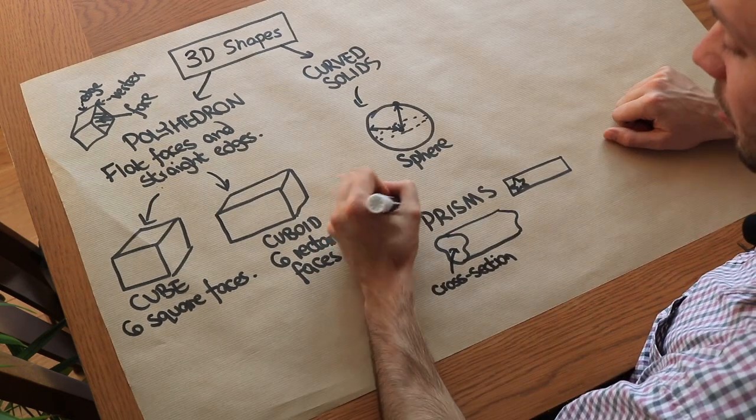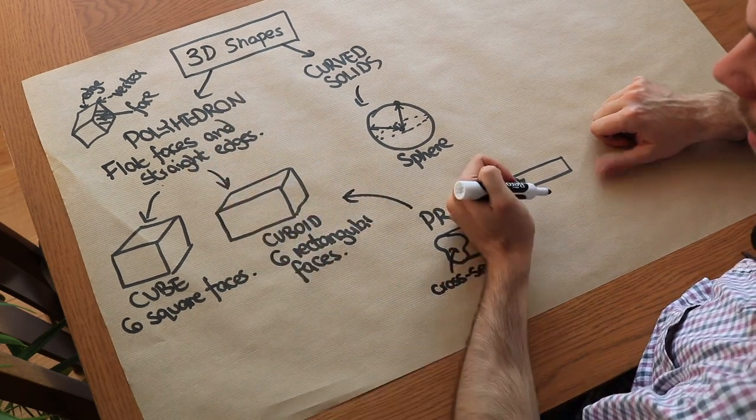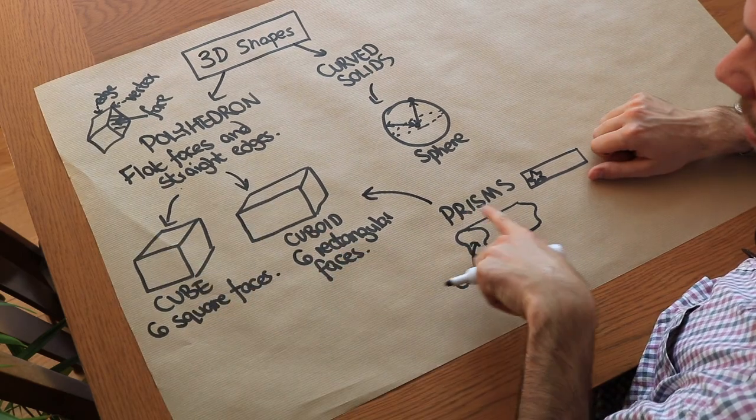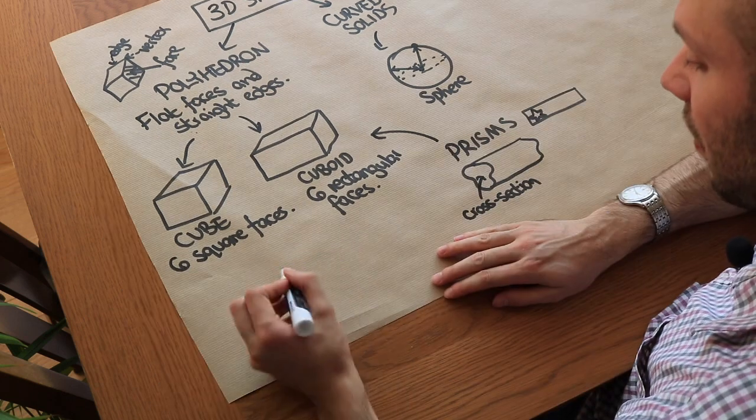Now a cuboid is a type of prism because wherever you chop the cuboid you will see a rectangle. And actually a cube is also a prism. Wherever you chop a cube you will see a square. But we could have other prisms as well.